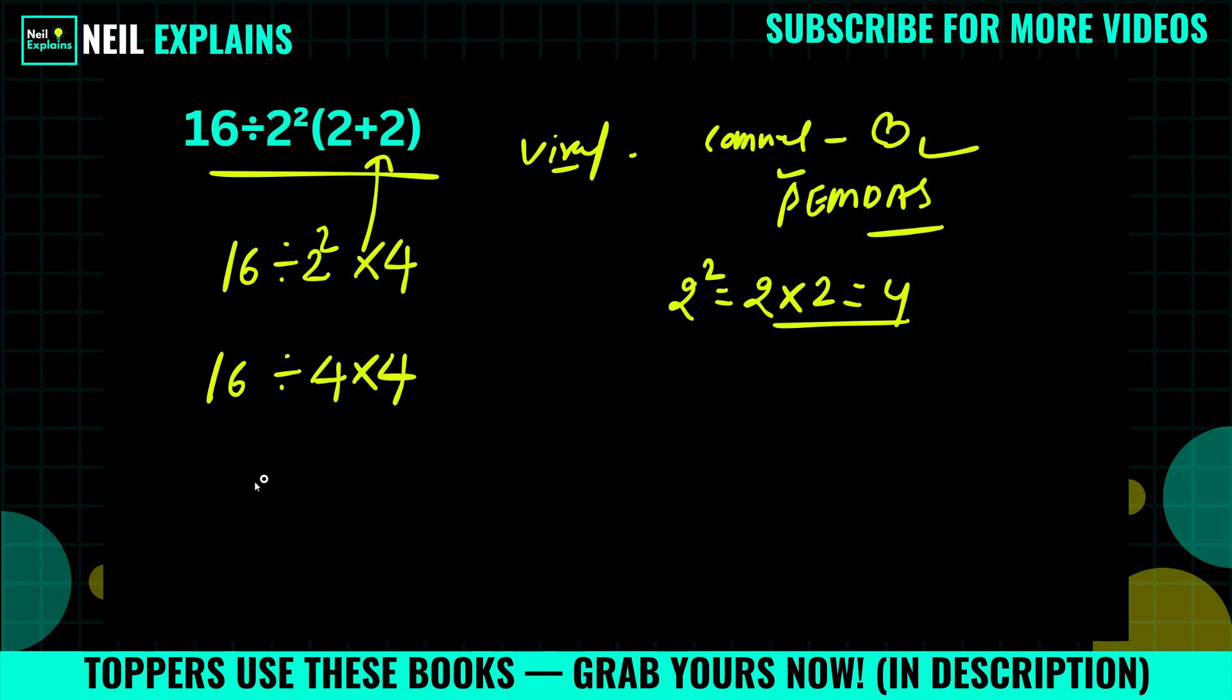So if you think 16 divided by 4 times 4 that is 16 and 1 will be the answer, then you are wrong. So what will be the correct way? We will explain 16 divided by 4 into 4.